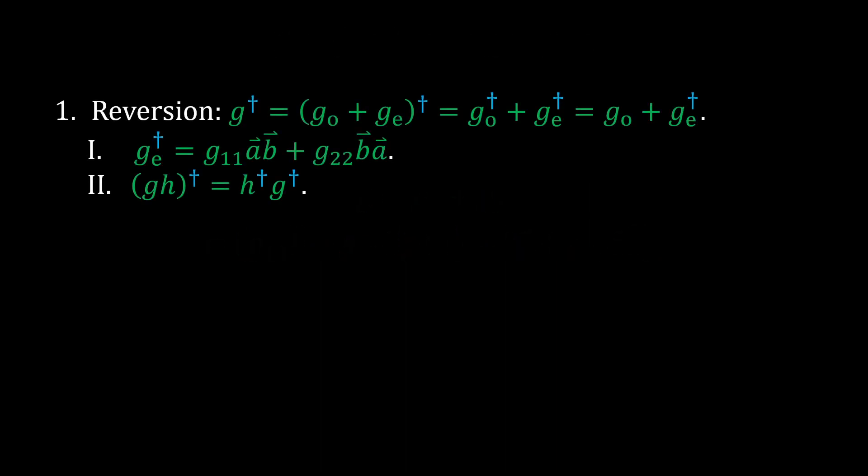Now we'll look at the new conjugations. The first is reversion, denoted by the dagger. It reverses the order of vector-vector products, meaning that it does not conjugate the odd part of a geometric number, but it changes the even part. The change may be subtle, but notice that the scalars are now associated with the opposite bivectors.